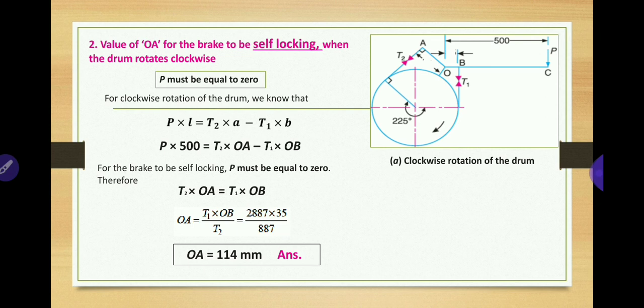This is how you solve a problem when the self-locking condition is given: write the moment equation, set P equal to zero, and find whatever quantity is asked in the problem.